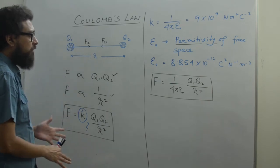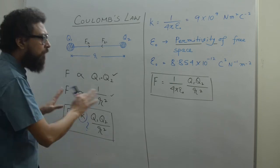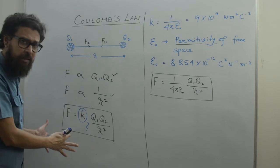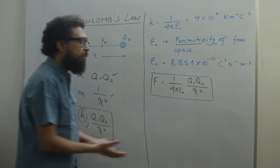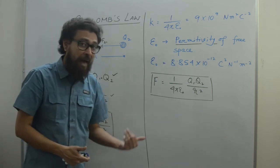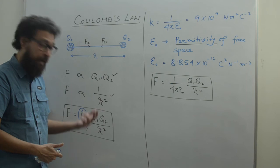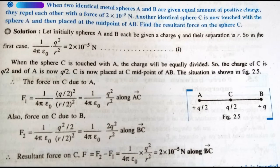Since force is a vector quantity, you cannot see any vector in the current expression. We have to find a vector expression for this particular law. Now here is an example: two identical metal spheres A and B given an equal amount of positive charge repel each other with a force of 2 × 10⁻⁵ N. Another identical sphere C is now touched with A and then placed at the midpoint of AB. Find the resultant force on sphere C. This is a very basic sum based on Coulomb's law.